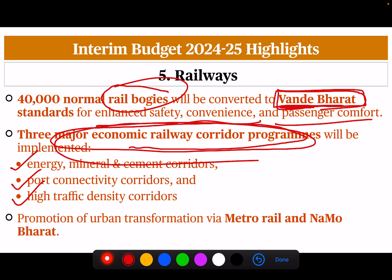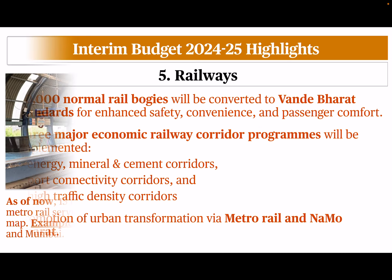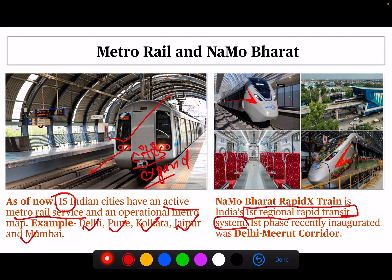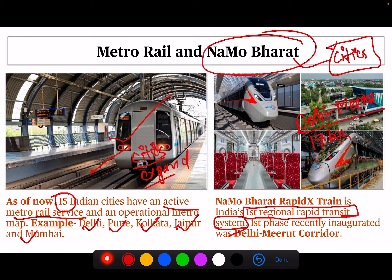The last railway announcement is the promotion of urban transformation via Metro Rail and Namo Bharat trains. As of now, 15 Indian cities have active Metro Rail service, including Delhi, Pune, Kolkata and Jaipur, and the budget announced expansion to other cities. Regarding Namo Bharat — the Namo Bharat Rapid X train — this is India's first regional rapid transit system, whose first phase was recently inaugurated by Prime Minister Modi on the Delhi-Meerut corridor covering a 17 km stretch. The budget announced that Namo Bharat will be expanded to other cities.